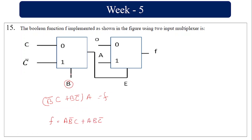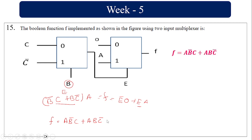I hope I'm clear. So F is equal to A·B·C̄ plus B̄·C, which gives the final Boolean function F implemented using the 2-input multiplexers.